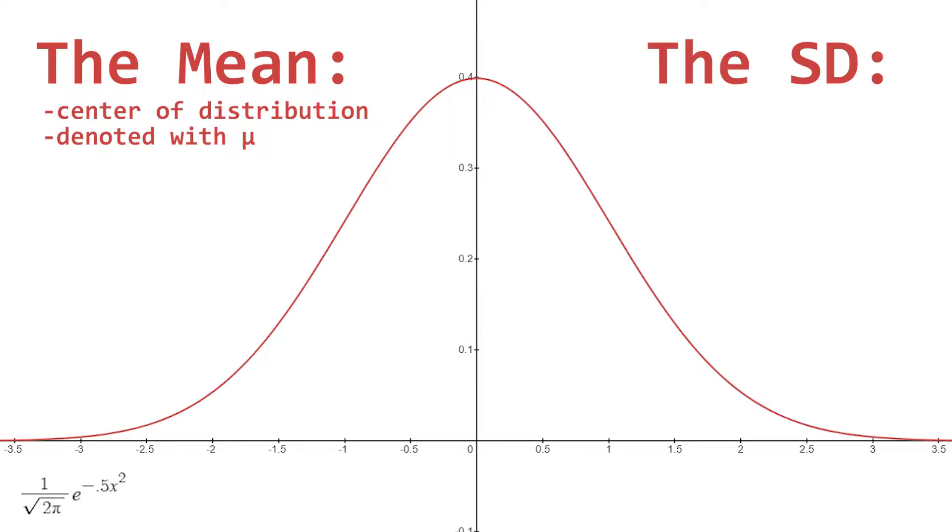Second is the standard deviation. And the standard deviation describes the width of your distribution, commonly referred to in statistics as the variability. And the standard deviation is typically denoted with the Greek letter sigma.